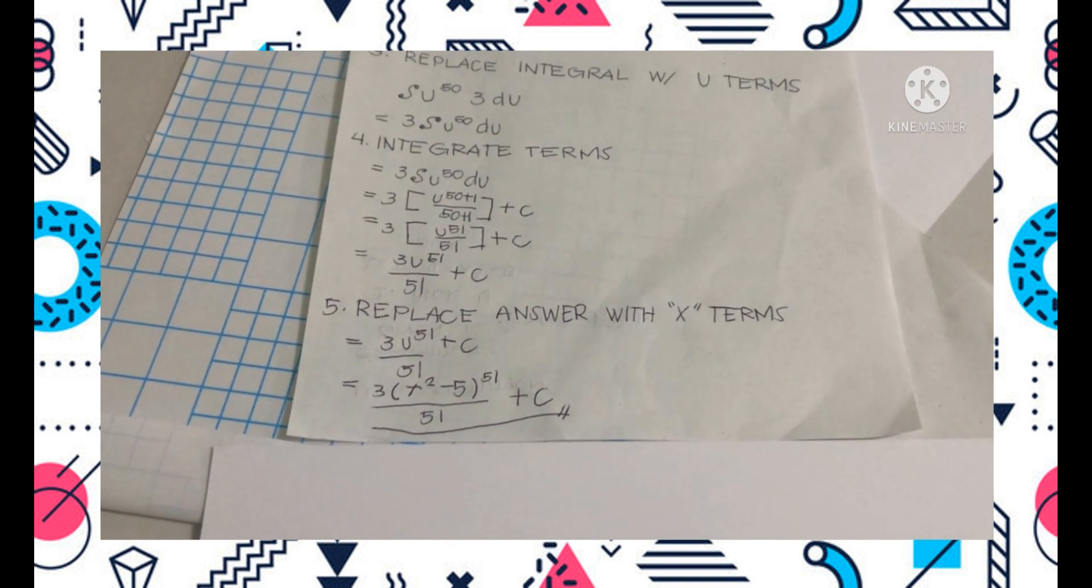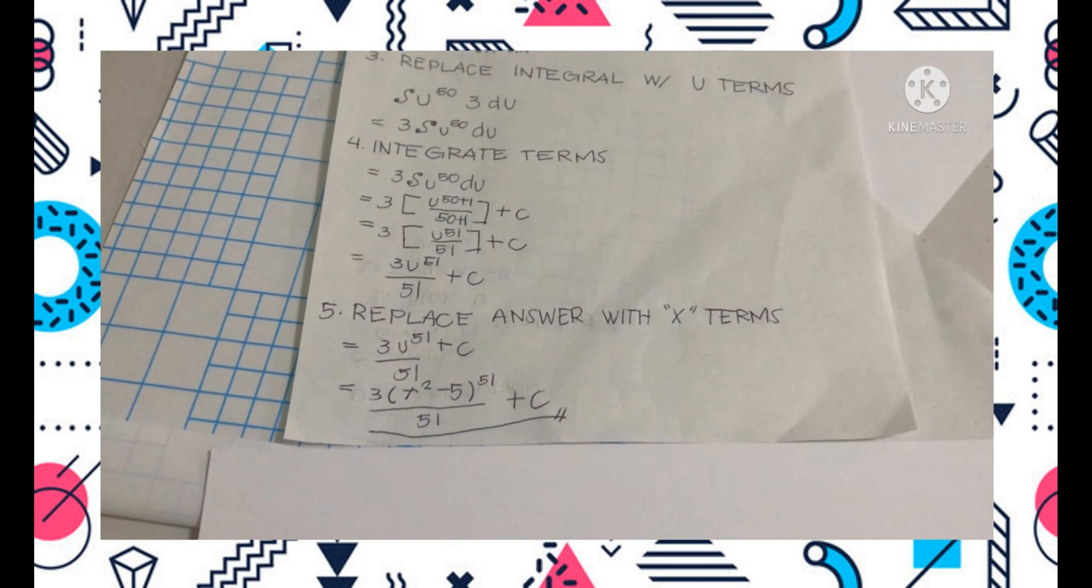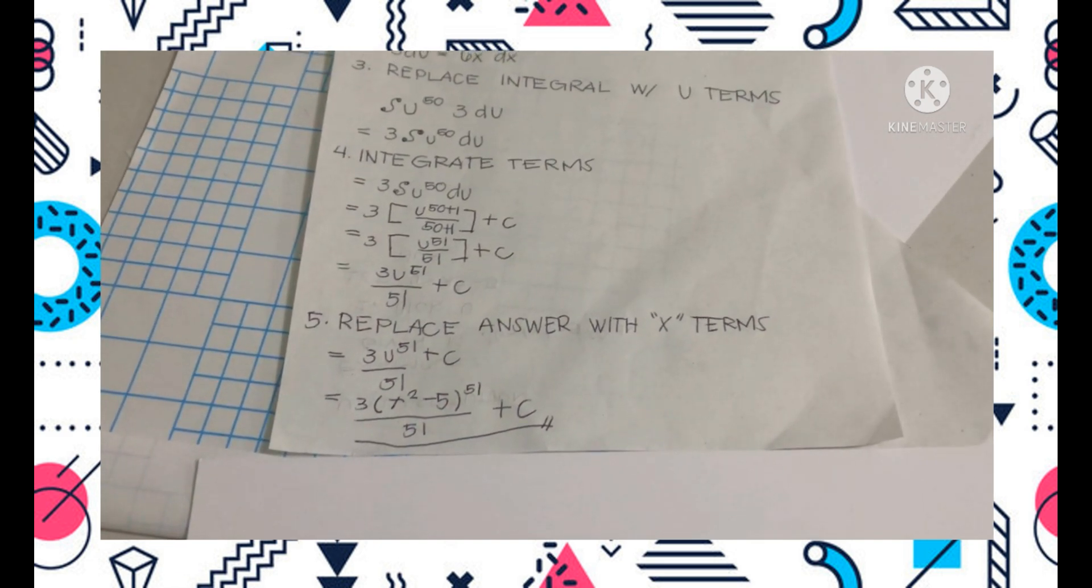The final answer is 3 open parenthesis x raised to 2 minus 5 raised to 51 over 51. Make sure not to forget to add the constant variable at the end of the equation. Thank you.